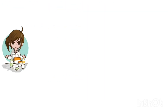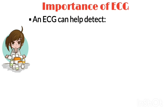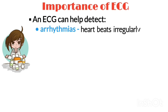Now we are going to discuss why ECG is important and what it can help detect. An ECG can help detect arrhythmias, which are where the heart beats too slowly, too quickly or irregularly.